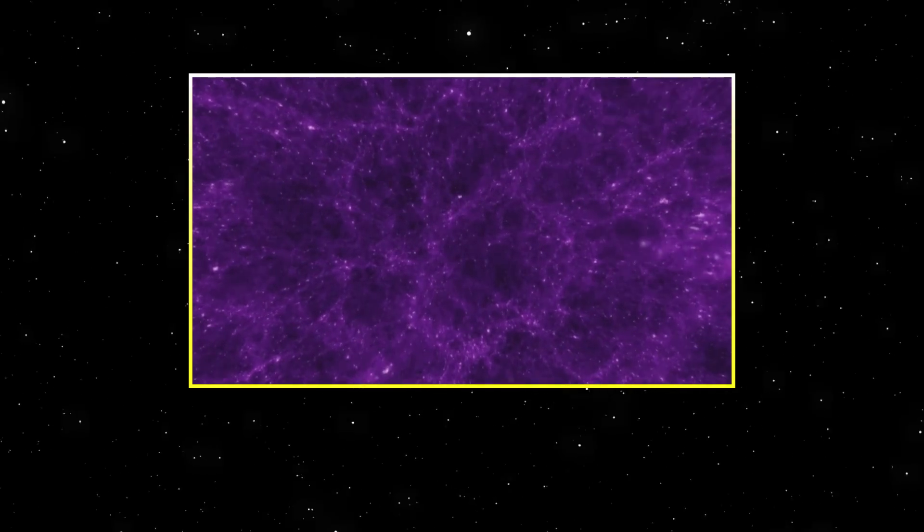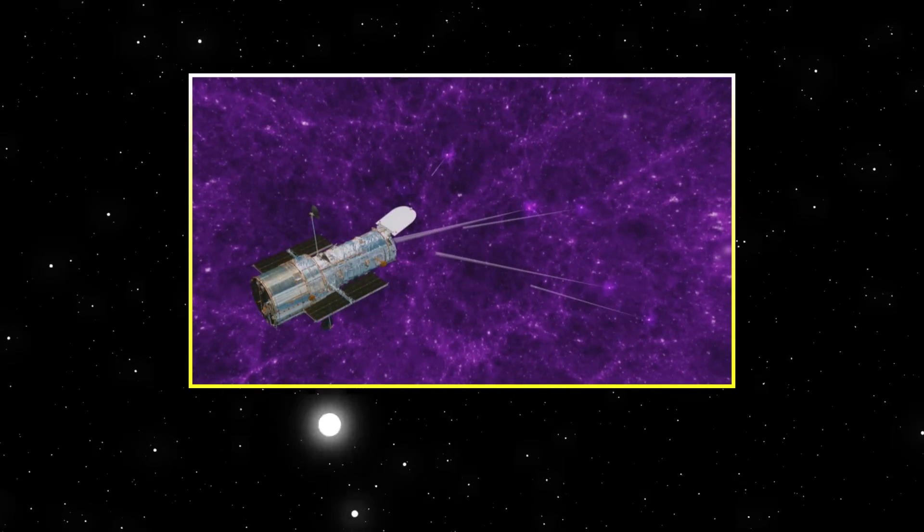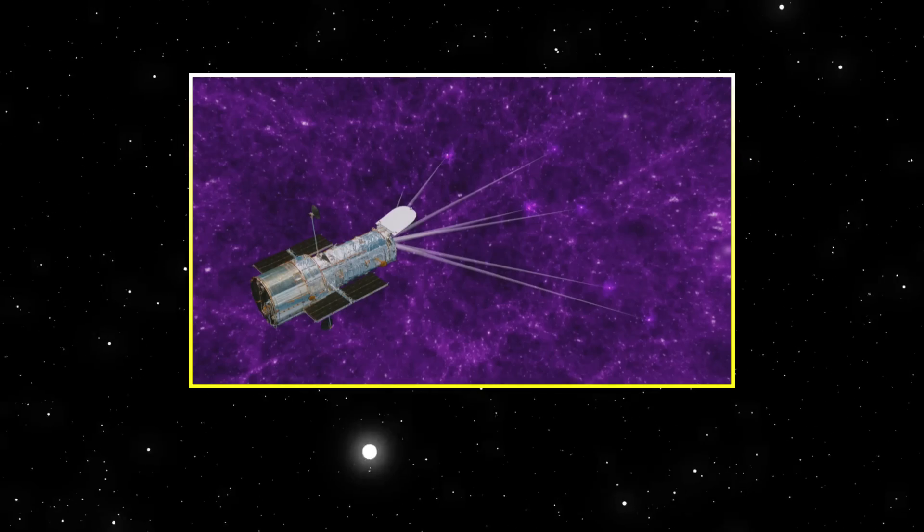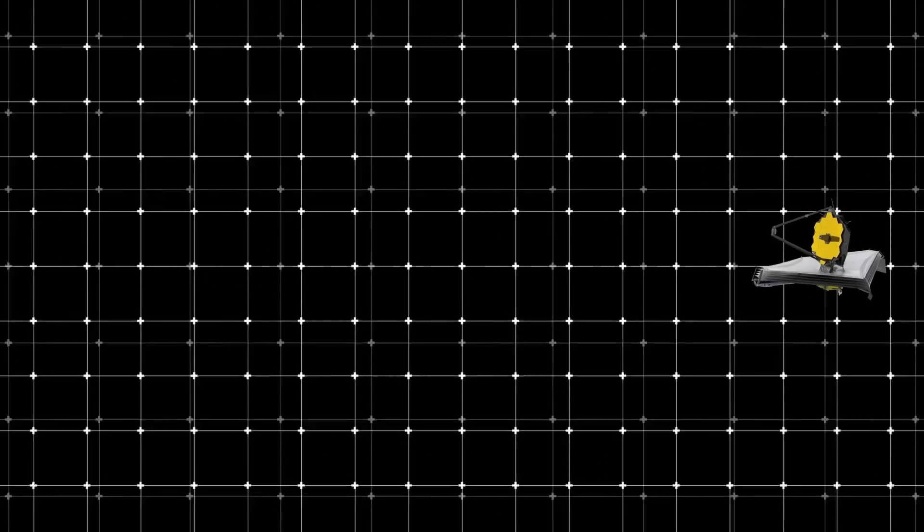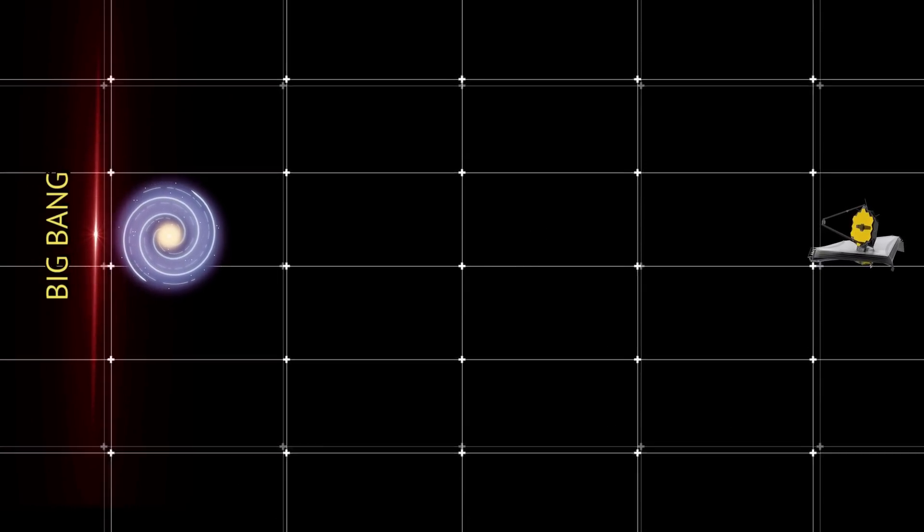Data from the Hubble telescope suggested that disk galaxies were almost non-existent until the universe was about 6 billion years old, but Webb results pushed the time these Milky Way-like galaxies form to almost the beginning of the universe.